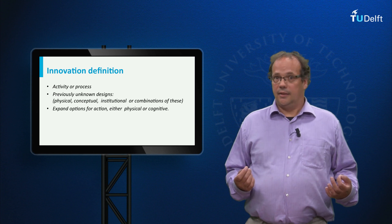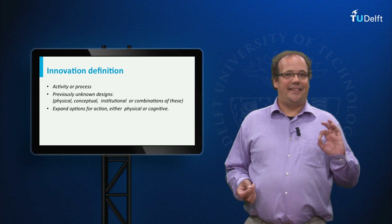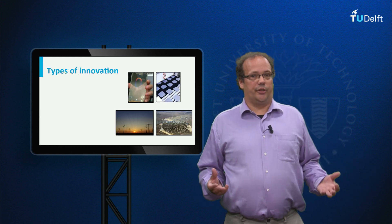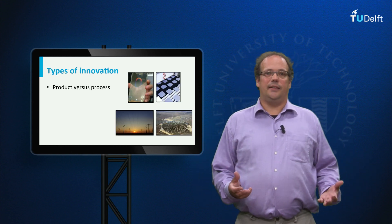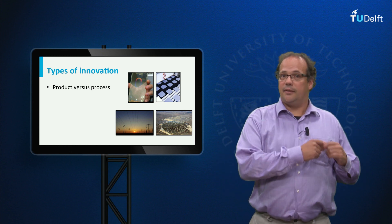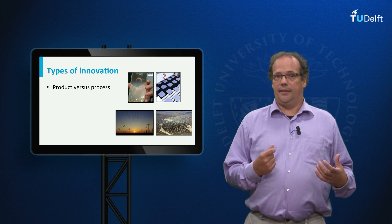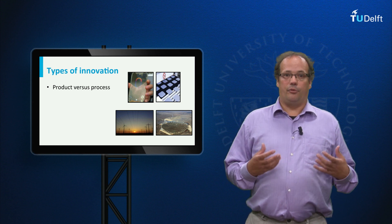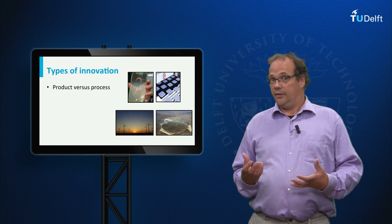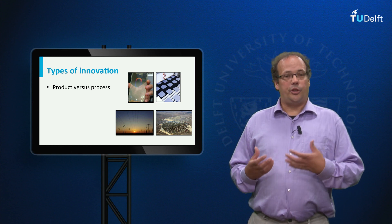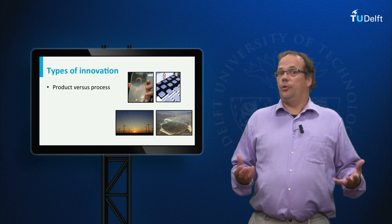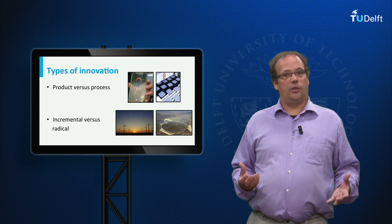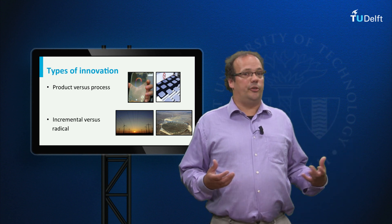In today's lecture I will focus specifically on technical innovation. Technical innovation comes in different sorts. An often made distinction is that between product innovation on the one hand and process innovation on the other hand. Product innovation is an improvement in the product design, while process innovation pertains to the production process. So a new mobile phone is a product innovation, but a new assemblage technology for mobile phones is a process innovation.